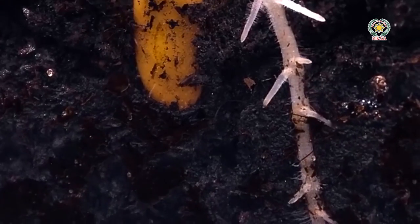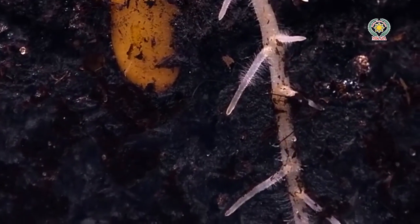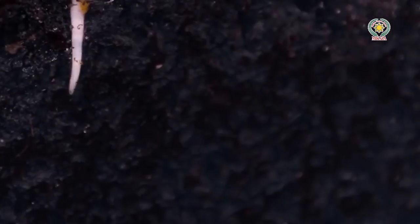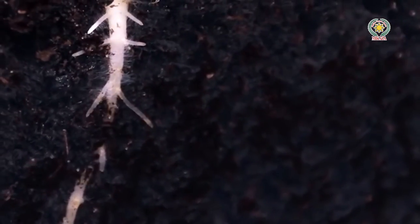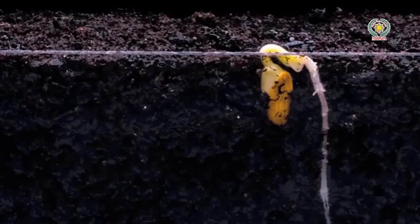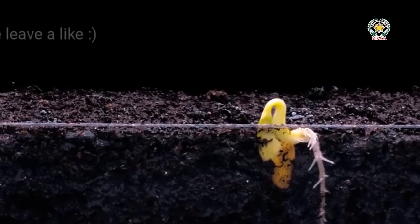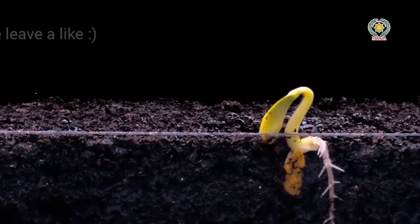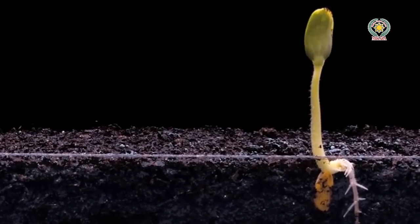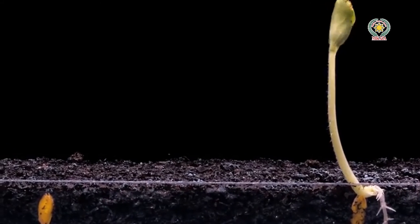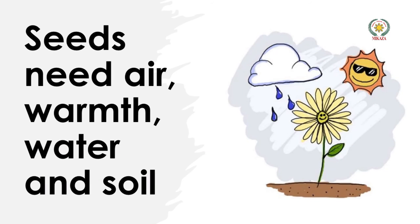The shoot later grows into the stem, and roots spread under the ground. Now, seed germination: seed germination is the growing of a plant from a seed. Most plants grow from seeds, but not all seeds grow into plants — only ripe and healthy seeds grow into plants.